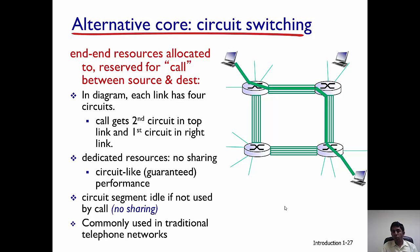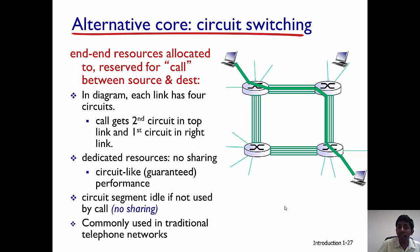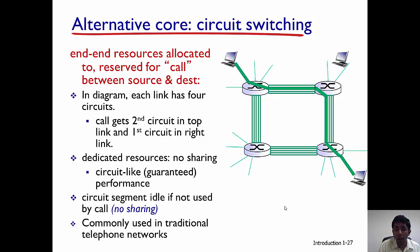An alternative to packet switched networks is circuit switched networks. In circuit switching, the entire resource between the two end hosts must be reserved before any data or voice can be communicated, providing a circuit-like performance guarantee. In this diagram, each link has four circuits, and one circuit on both links must be reserved for the two hosts to communicate — shown marked in deep green. Though there is a performance guarantee, the drawback is that the call must first be set up and resources on the entire path reserved before data can be communicated. Circuit switching is typically used in telephone networks, whereas the internet uses packet switching.